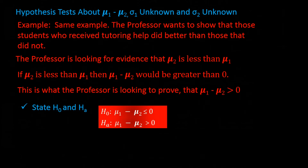Looking at these hypotheses: since it focuses on a direction, this is a one-tail test. Since the area of focus is the greater-than side — look at the sign in the alternative hypothesis, it is a greater-than sign — this is an upper-tail test, and the area of rejection would be the upper tail area.